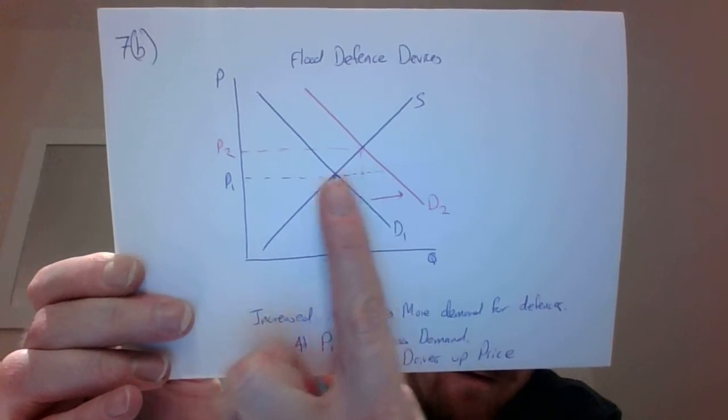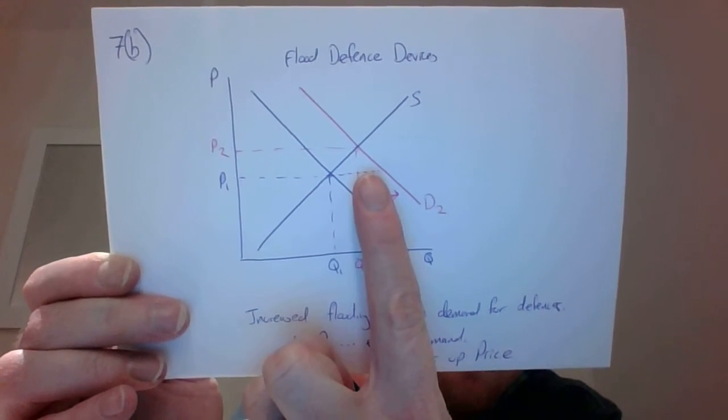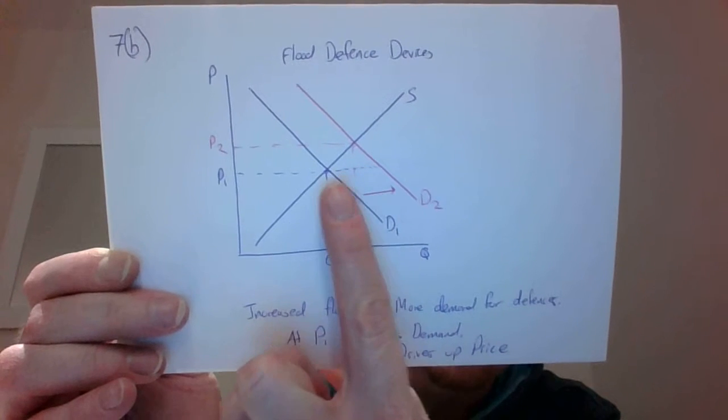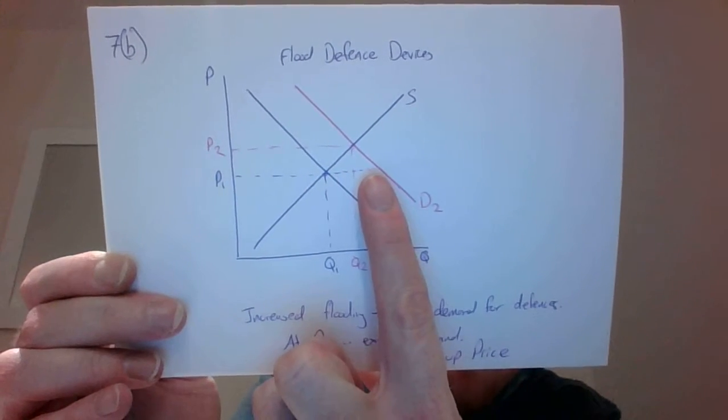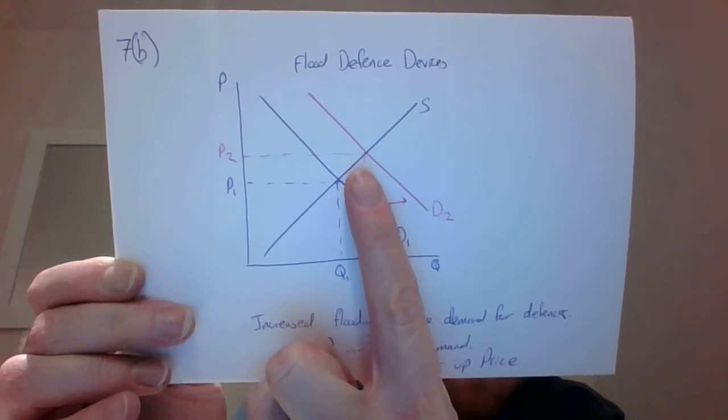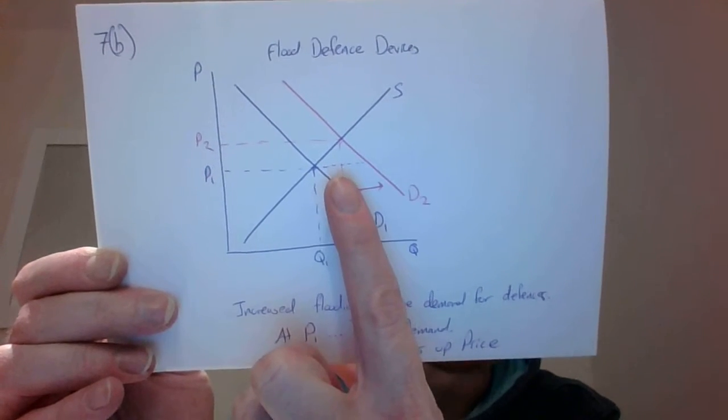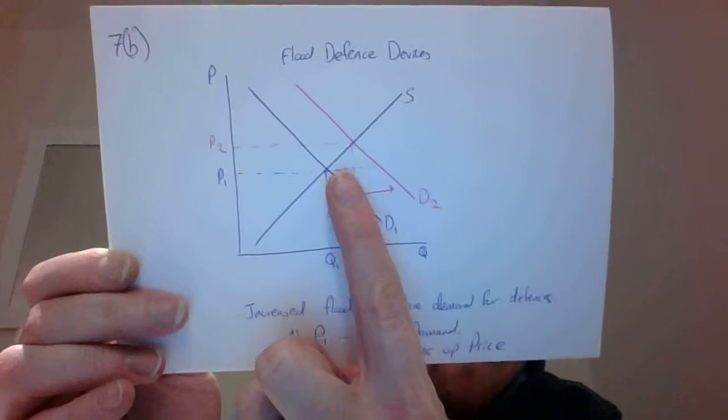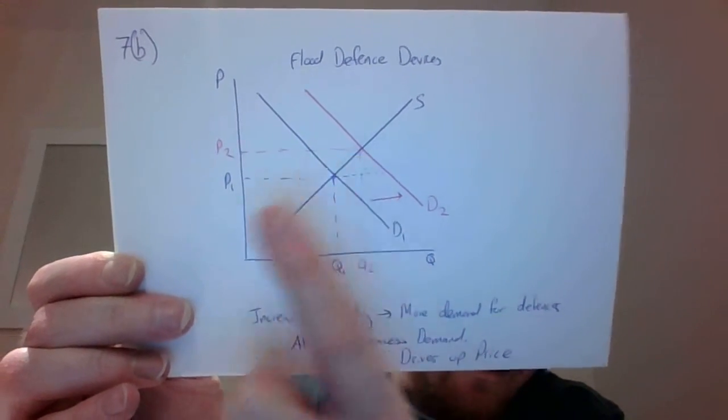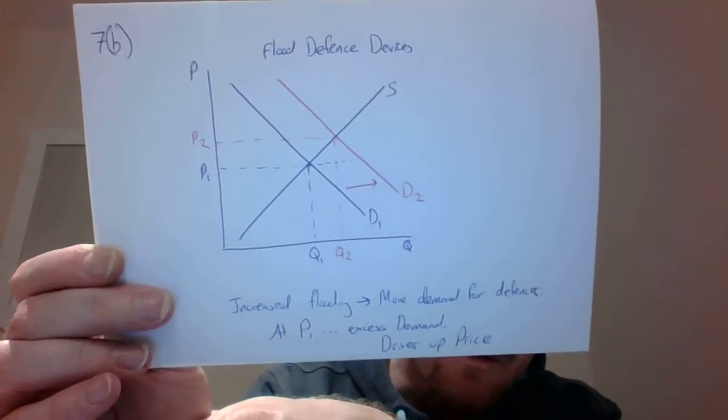we have a situation of excess demand. And then using your analysis skills to say that in a situation of excess demand, you're going to see an upward rise in prices so that there's no longer a shortage of these things, and so therefore that's going to drive the price from P1 to P2.